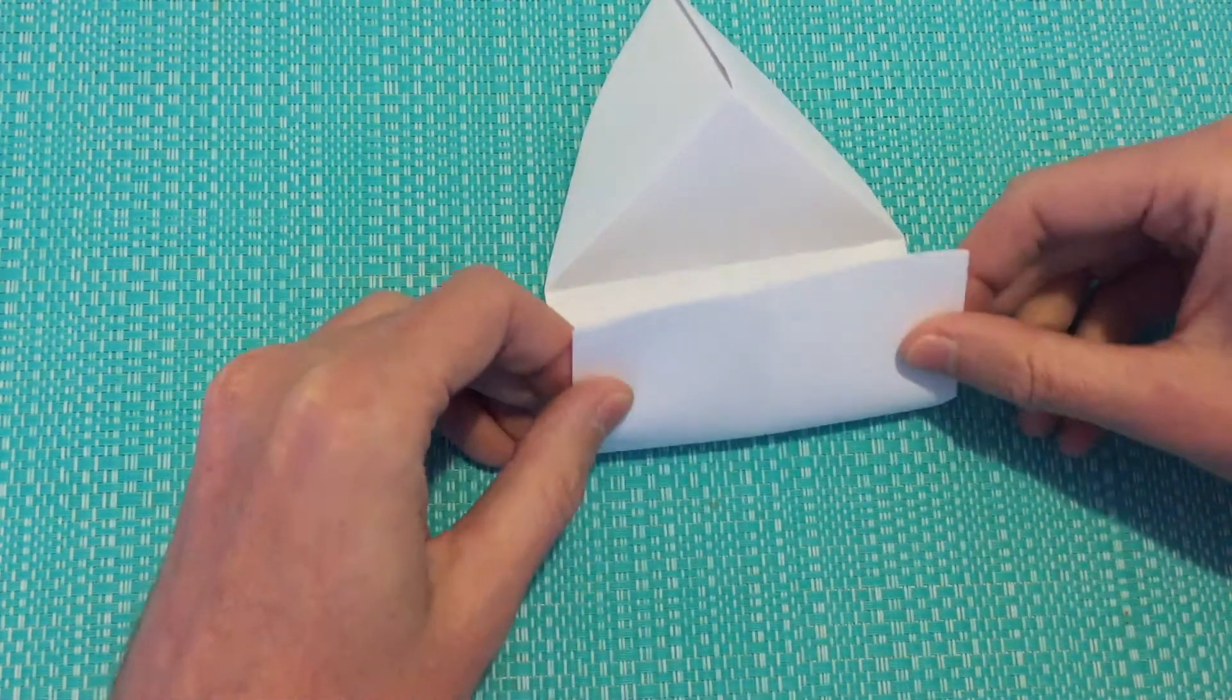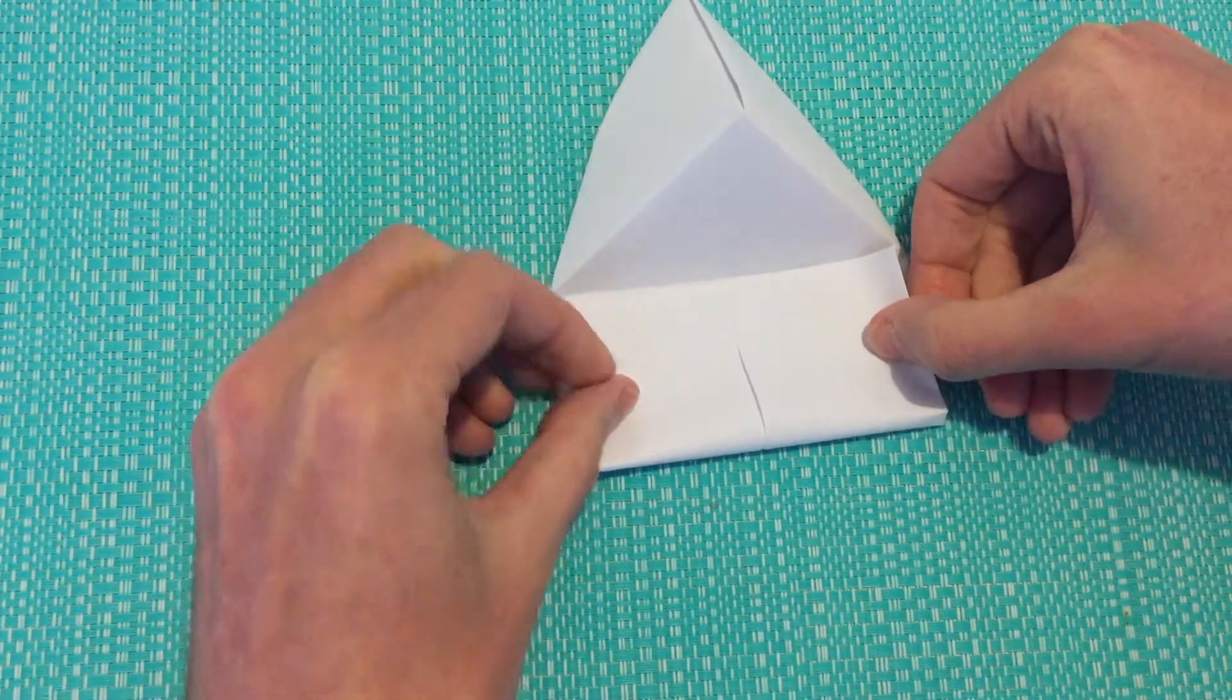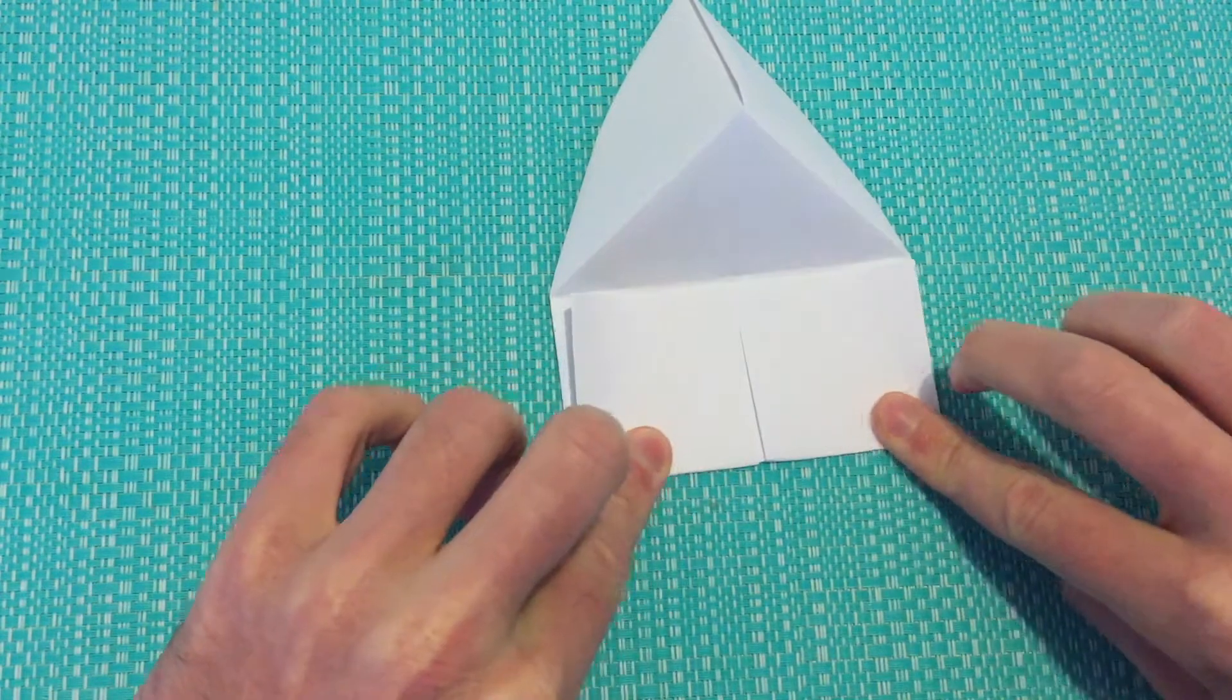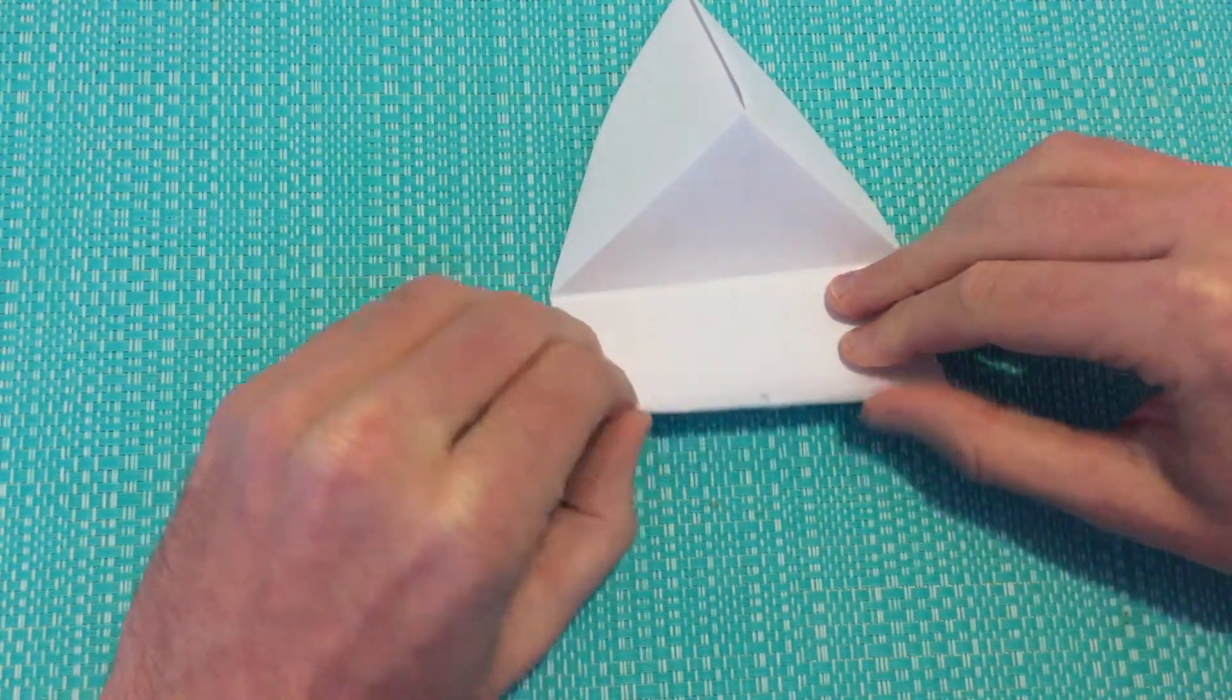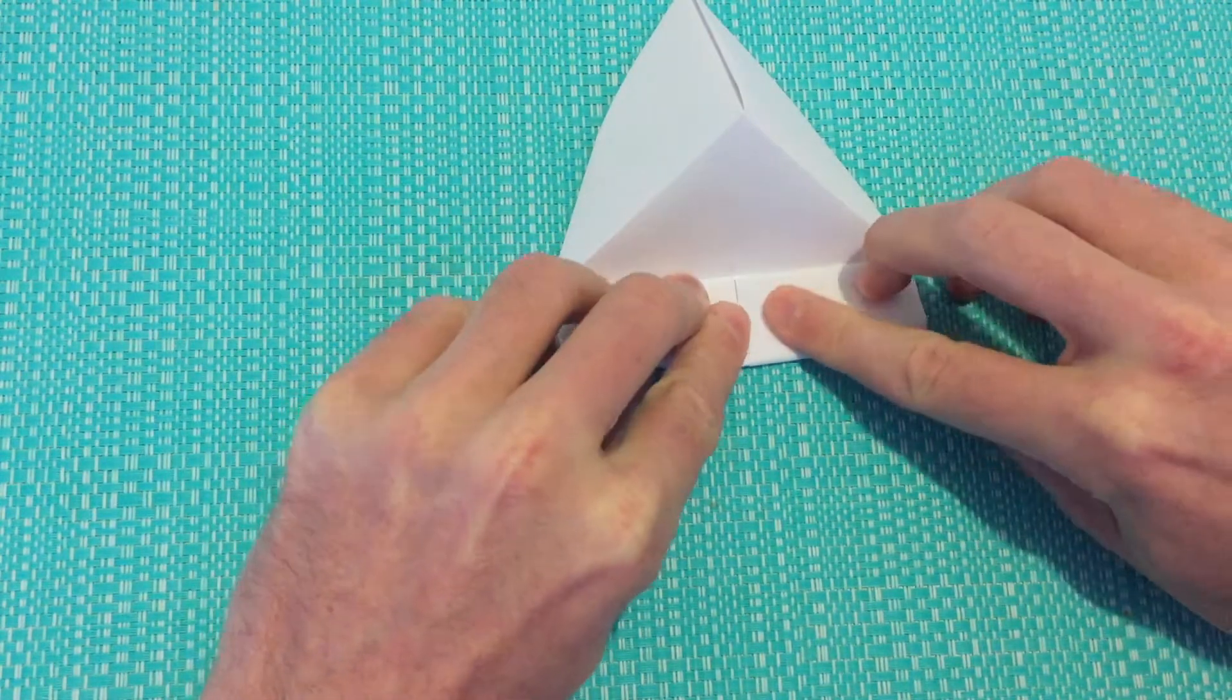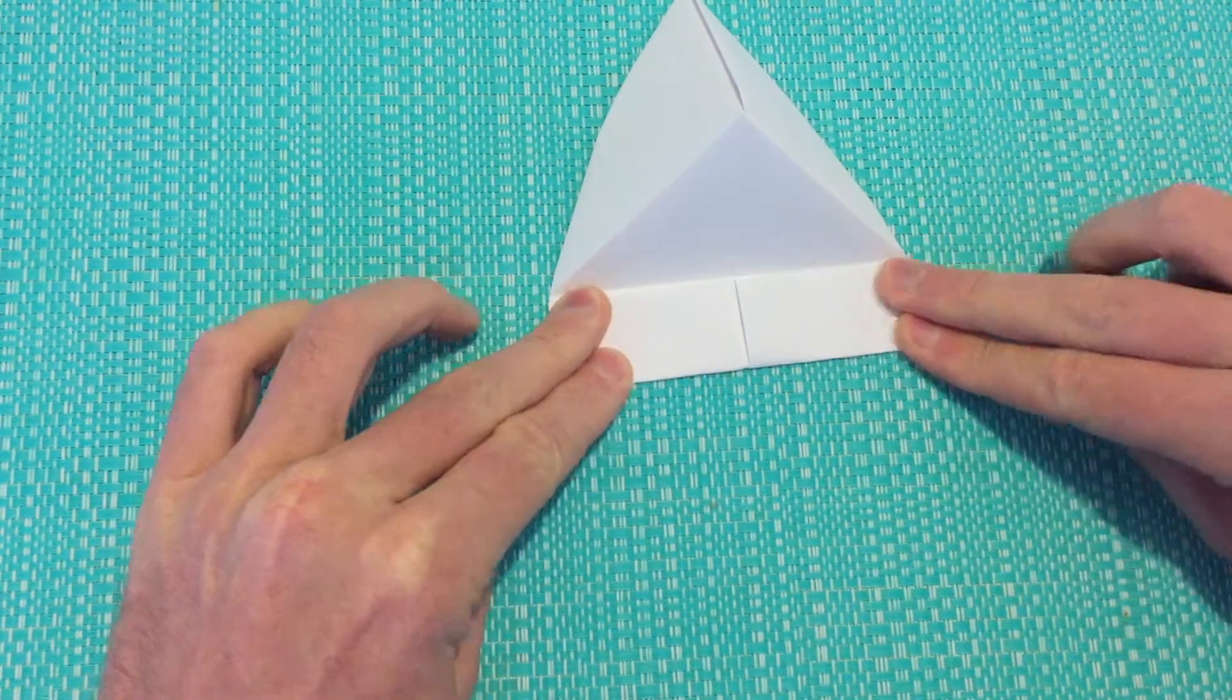I'm just going to take this bottom edge, I'm just going to fold it over up to the crease, and create a crease, fold it a second time, create a crease.